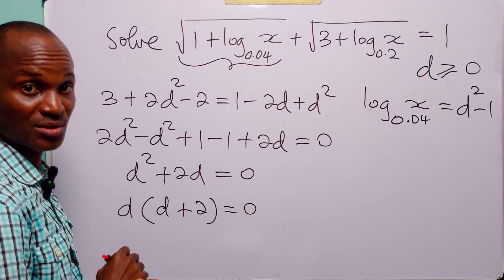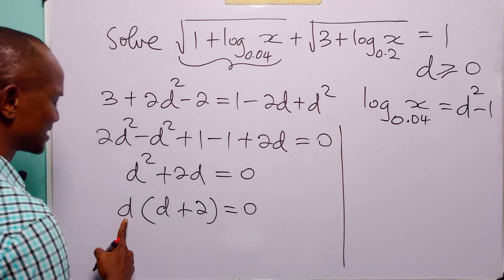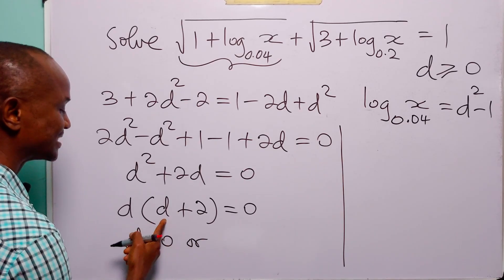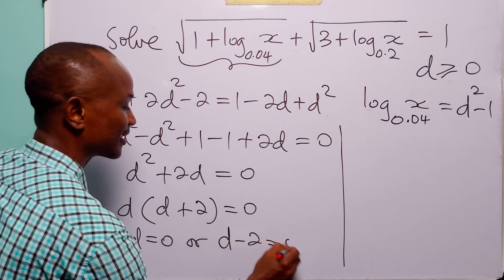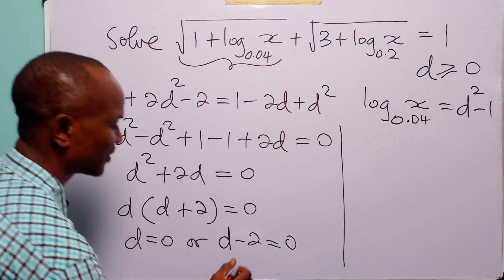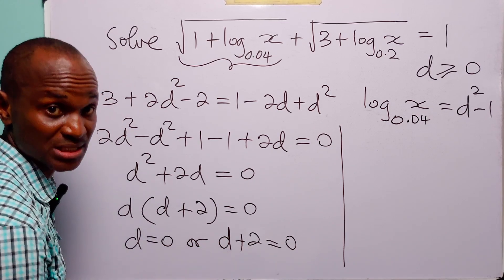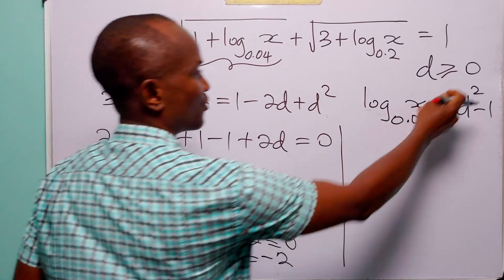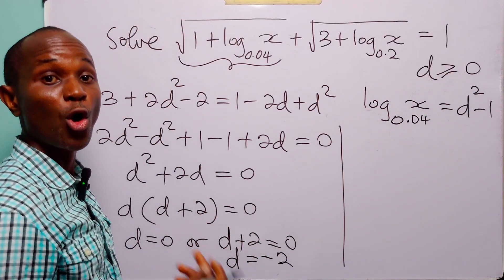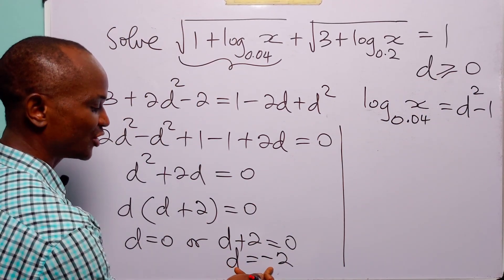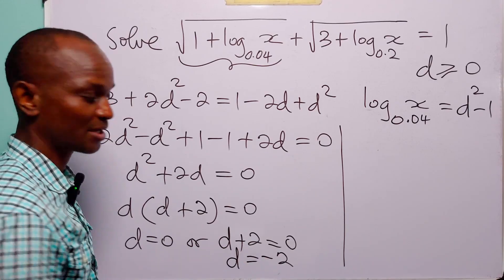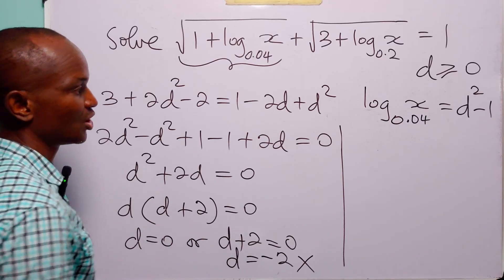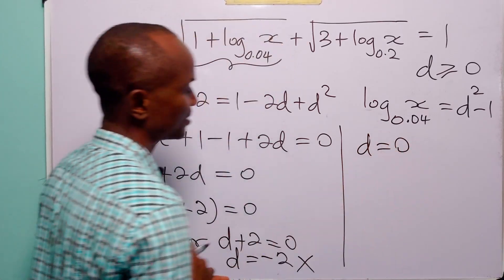Factorizing: d times (d plus 2) equals 0. This means either d equals 0, or d plus 2 equals 0, giving d equals minus 2. But remember d must be greater than or equal to 0, so d equals minus 2 is unacceptable. Therefore d equals 0.